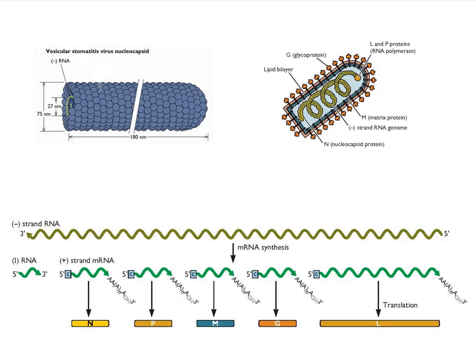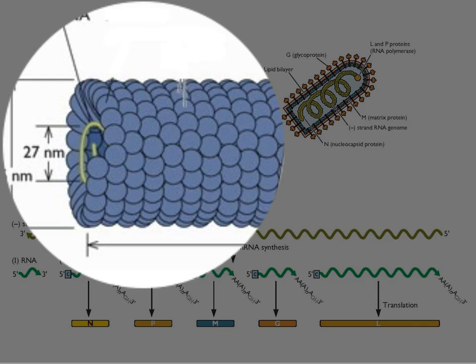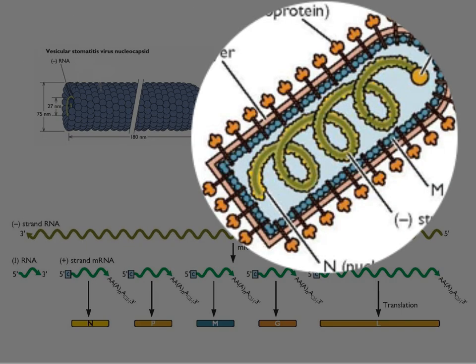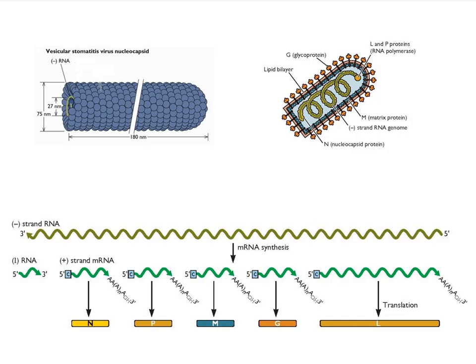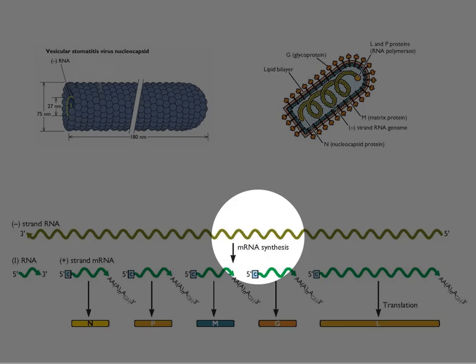Here's a schematic of the virion. Here's the nucleocapsid, and here's the complete virion with the envelope. The negative strand genome is complexed with proteins, including the polymerase. As it comes into cells, it immediately begins making individual mRNAs — one, two, three, four, five — and each of them encodes a single protein.